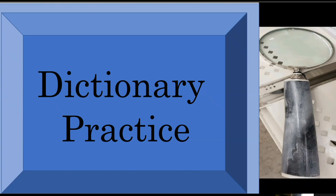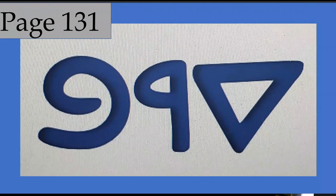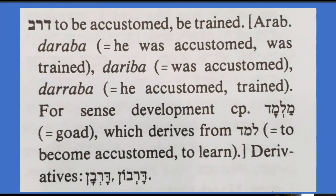For dictionary practice, on page 131 we'll look for Dalit-Resh-Bet — very similar to the word we had earlier, but with Resh and Bet switched places. This is defined as to be accustomed, be trained. He was accustomed, was trained. And even to learn.